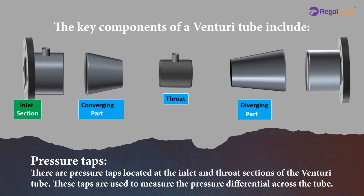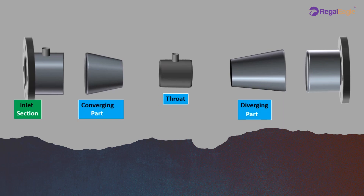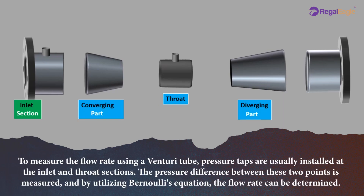Pressure taps are located at the inlet and throat sections of the venturi tube, and are used to measure the pressure differential across the tube. To measure the flow rate, pressure taps are installed at the inlet and throat sections. The pressure difference between these two points is measured, and by using Bernoulli's equation, the flow rate can be determined.